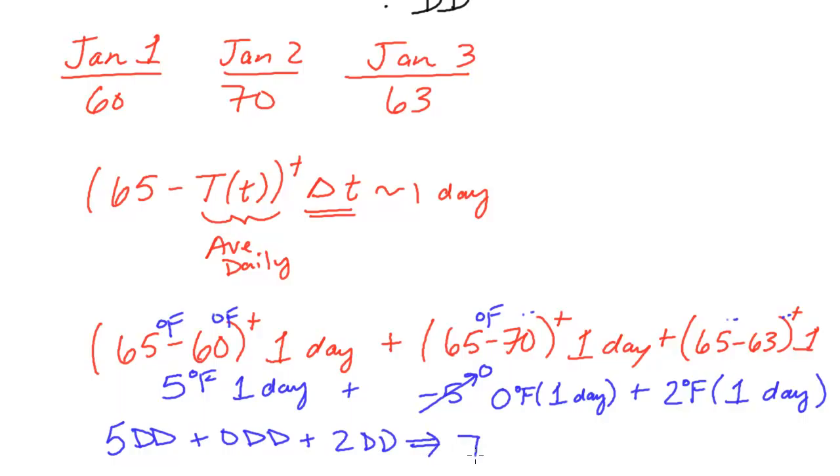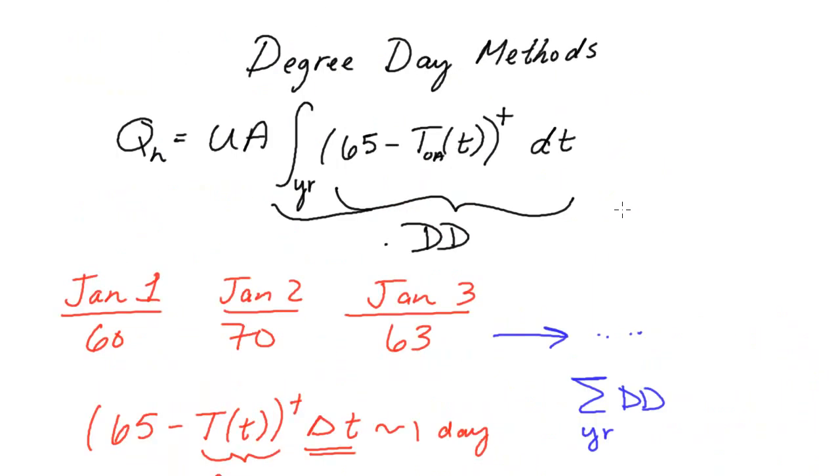So we have 5 degree days plus 0 degree days plus 2 degree days. That's going to end up giving you 7 total degree days. Now, we did this for 3 days. But typically what you see values tabulated for is the sum of the degree days over the entire year. So that calculation is pretty straightforward.